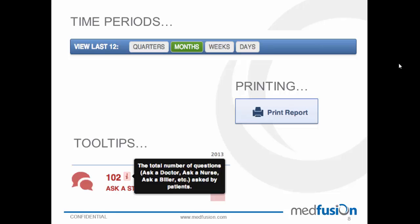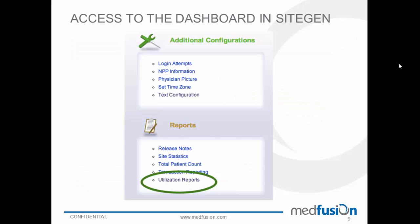To access this dashboard, in SiteGen on the main page there is a link to Utilization Dashboards in the lower left-hand corner under the area labeled Reports. You'll need access to SiteGen. Once you log in and reach the homepage, you'll see this link in the lower left-hand corner. Clicking on it will open up your dashboard.